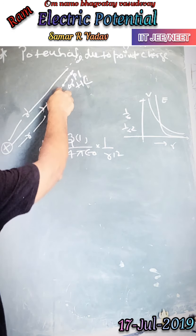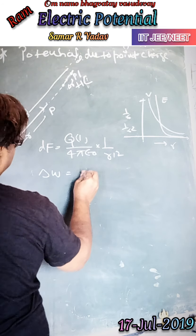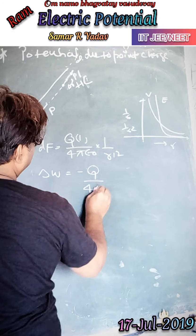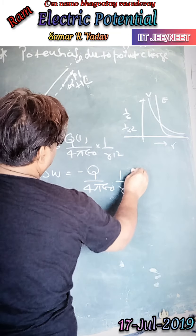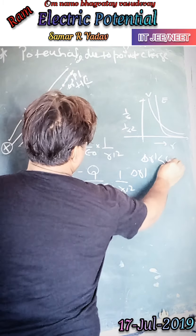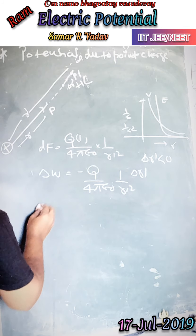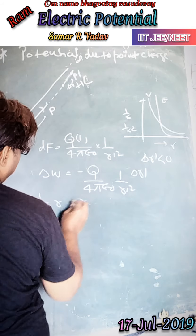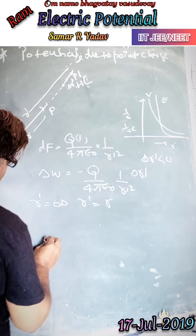Work has to be done against this field. We get delta W equal to minus Q times the field term. We set up the limits: R-dash goes from infinity to R. So the total work W is the integration from infinity to R.